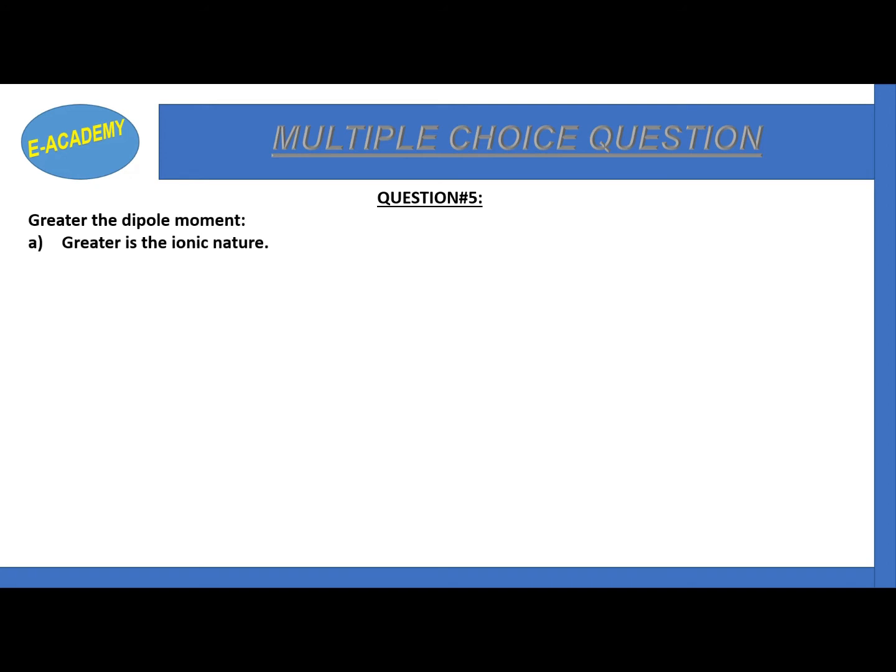Question number 5. AgCl is more polar than AgI because greater is the ionic character, lesser is the polarity, smaller is the ionic nature. If we have dipole moment greater, then we have the ionic nature greater. So this correct option is our option A.